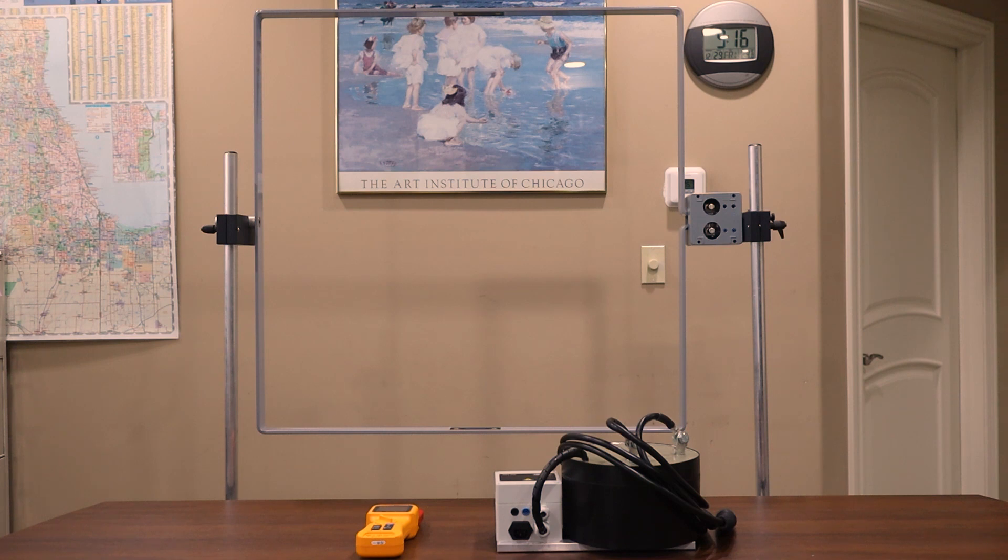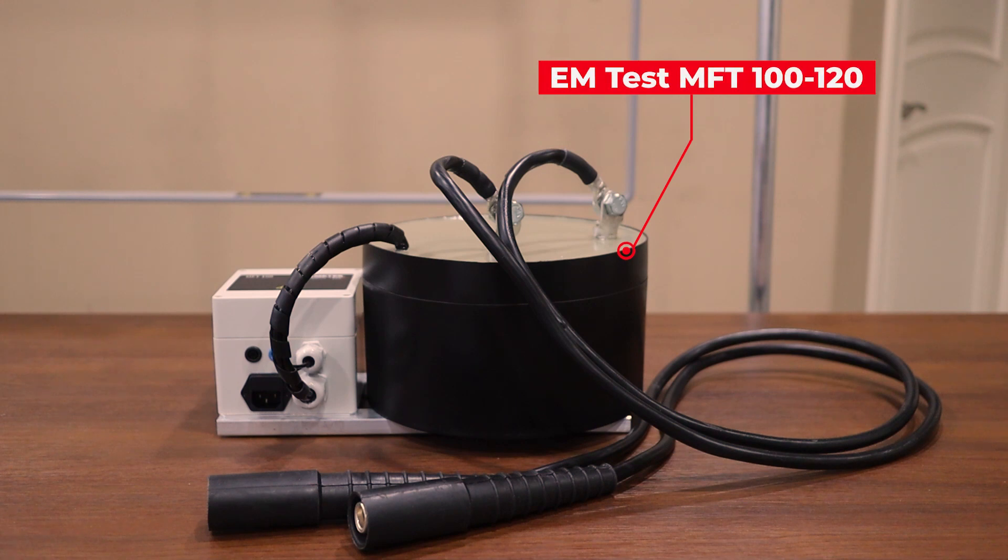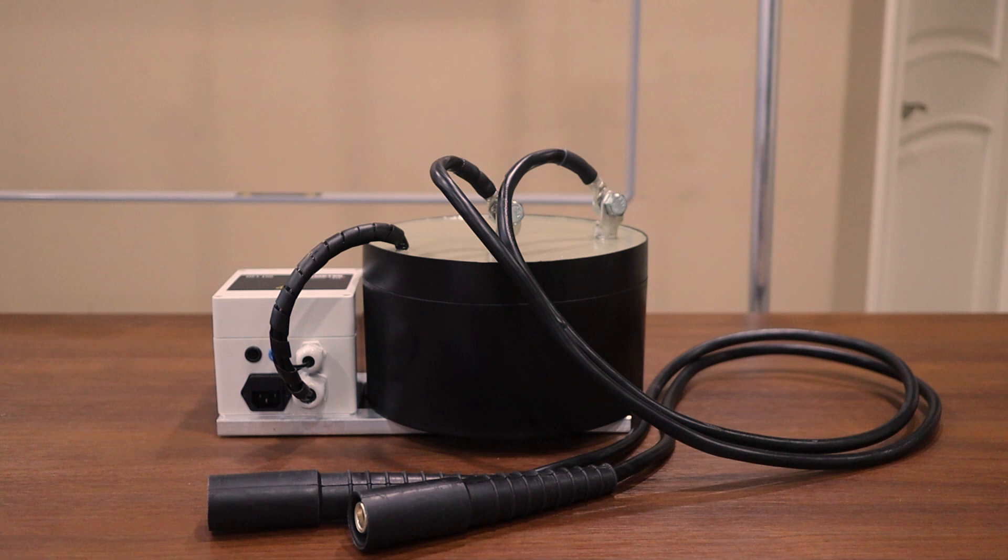Let's go ahead now and spend some time on the EM test MFT 100. Here's the MFT 100 magnetic field transformer. This transformer can provide continuous field levels from 80 amps per meter to 100 amps per meter and short duration levels as high as 1200 amps per meter. It can provide 50 or 60 hertz frequency fields which will be determined by the input power.